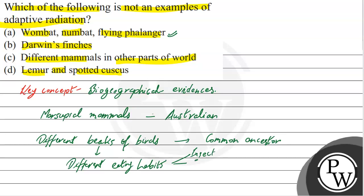Different feeding habits include insects, seeds, and fruits. This is beak modification, and this is an example of adaptive radiation.